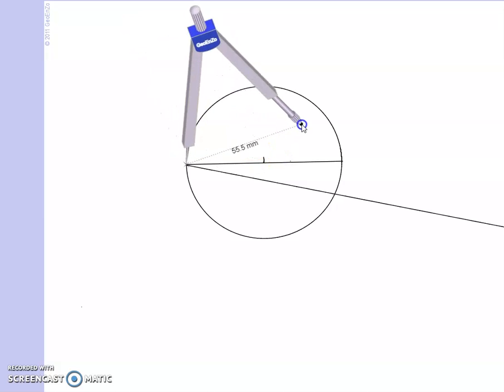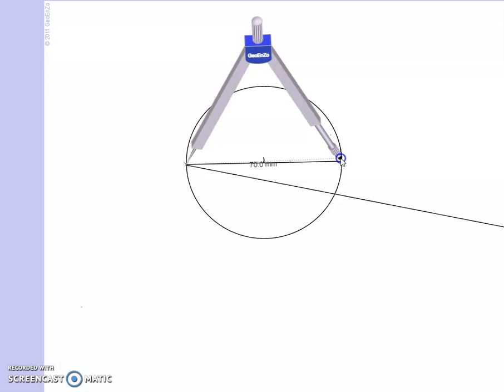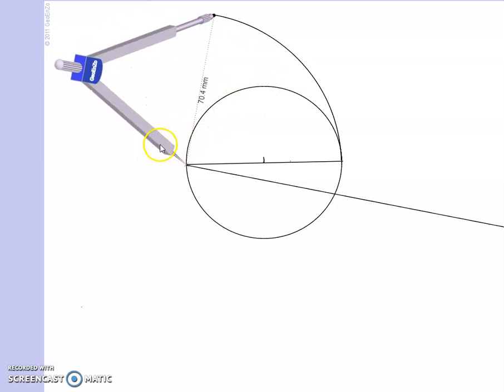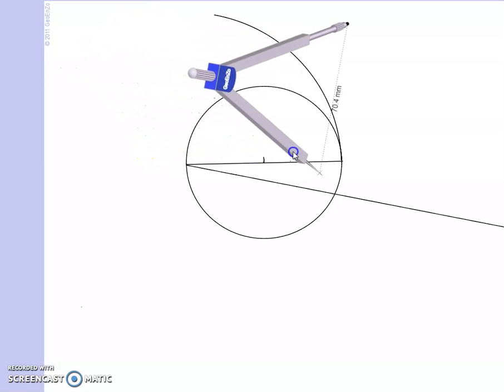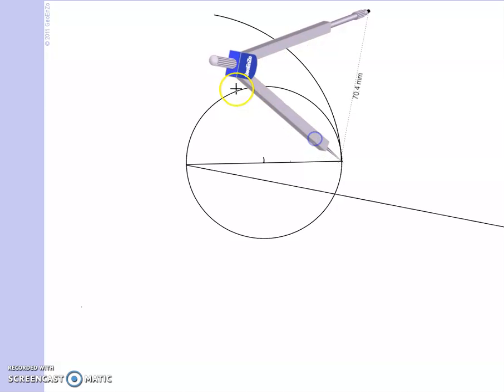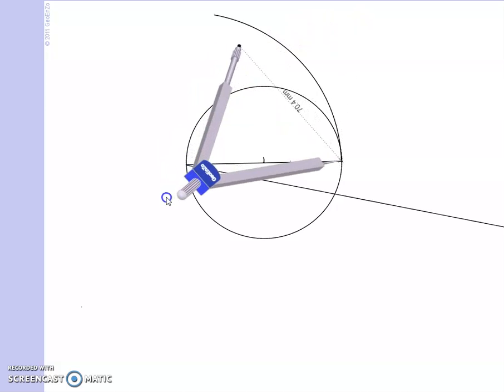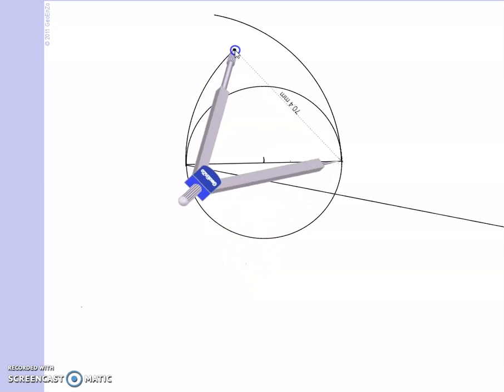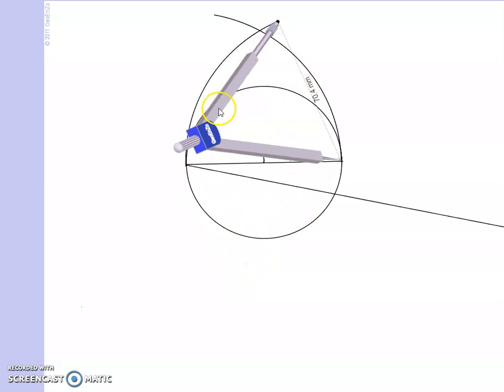To do that, first of all, I have to draw an arc which is equal to the radius of the circle. So this is the arc that I have taken which is equal to the radius of the circle. Now I will draw an arc on this side and at the same time, I will also draw an arc from the other side also. So this is how I can draw it. So this is the arc that I have drawn.